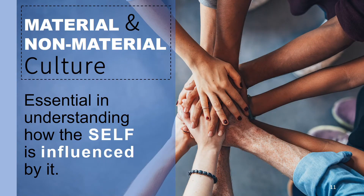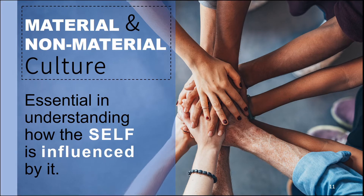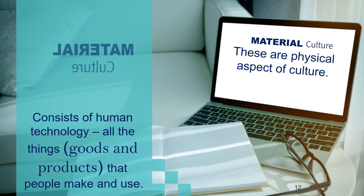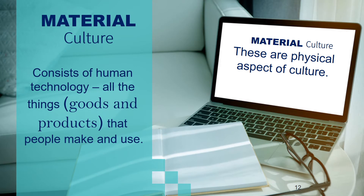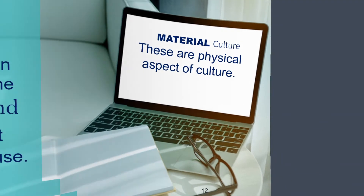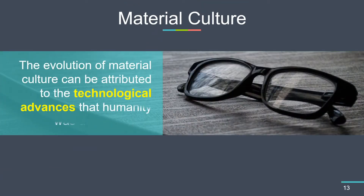We have two types of culture that influence the self: material and non-material culture. Material culture consists of human technology — all the things, goods, and products that people make and use. These are the physical, concrete, and tangible aspects of culture — everything that we see and touch. The evolution of material culture can be attributed to the technological advances that humanity has made.